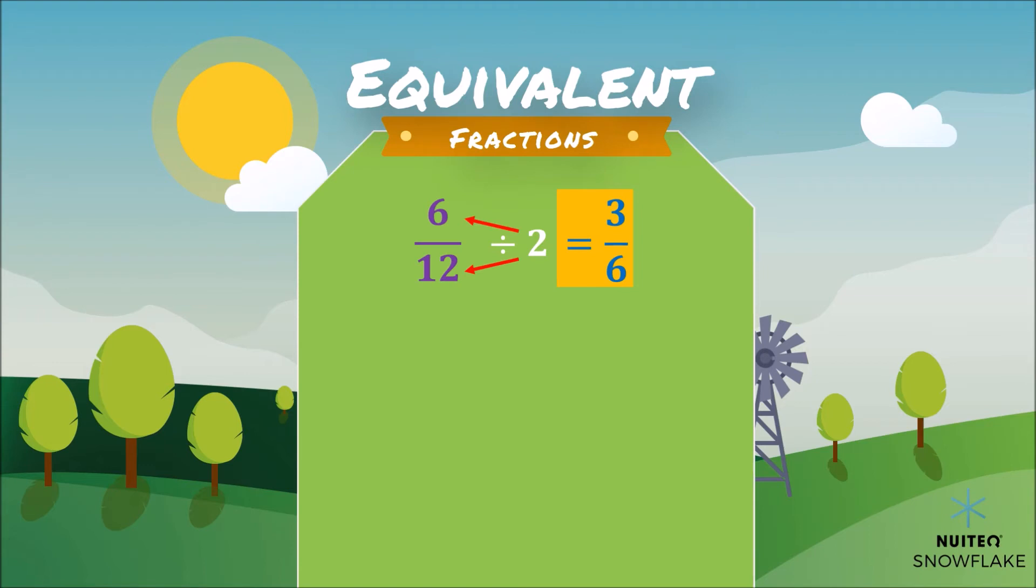So we can say 6 twelfths and 3 sixths are equivalent fractions. And visually it looks like this.